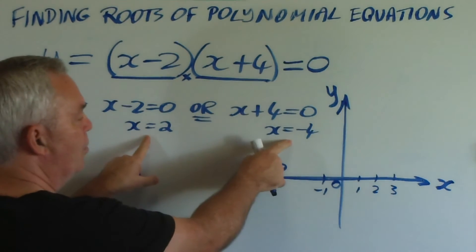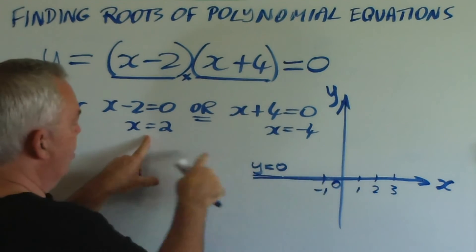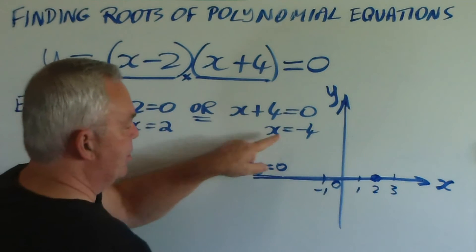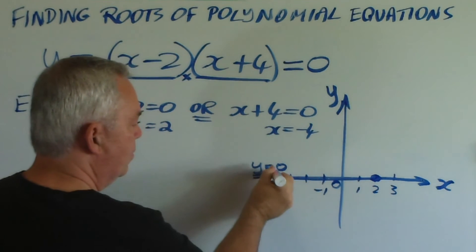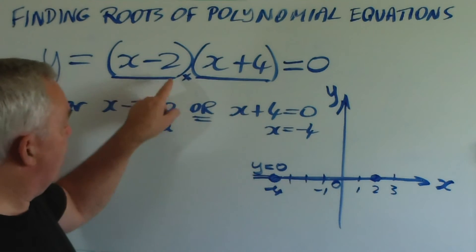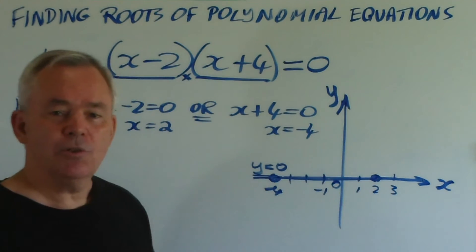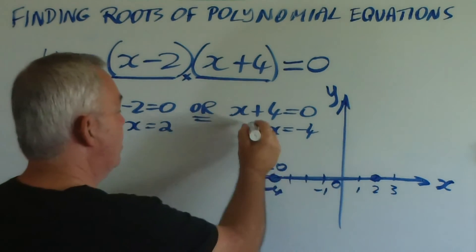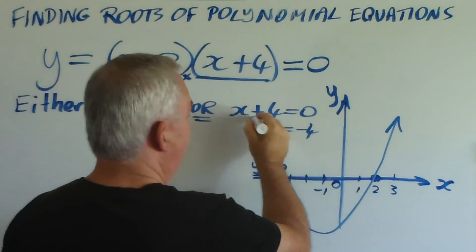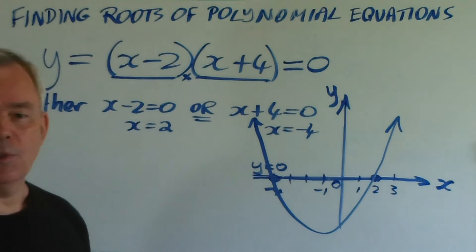So these two are very important points. And if we locate them on the graph, where x is two and where x is minus four, this graph must pass through those two points. It turns out that it does this and forms what we know as a parabola.